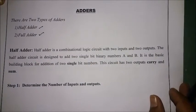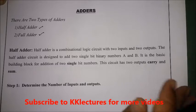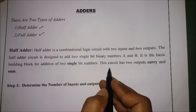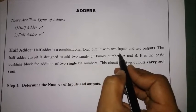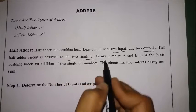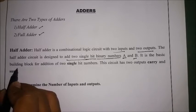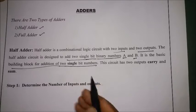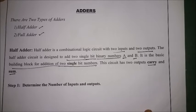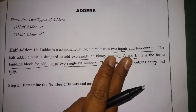Based on the specifications and definition given, we will design step by step. So first let us proceed with the half adder. A half adder is a combinational logic circuit with two inputs and two outputs. The half adder circuit is designed to add two single-bit binary numbers — let us take the two numbers as A and B. It is a basic building block for addition of two single-bit numbers, and this circuit has outputs: carry and sum.